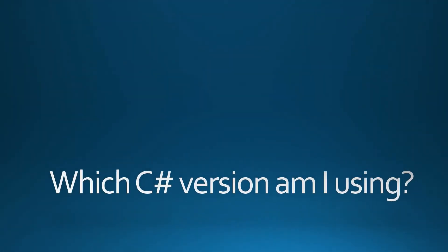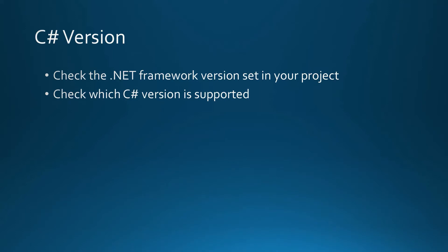Hello guys! Let's answer the question: which C# version am I using? To determine the C# version you are using, you have to do two steps. Firstly, you have to check the .NET Framework version which is set in your project, and secondly, you have to check which C# version is supported by this .NET Framework version.